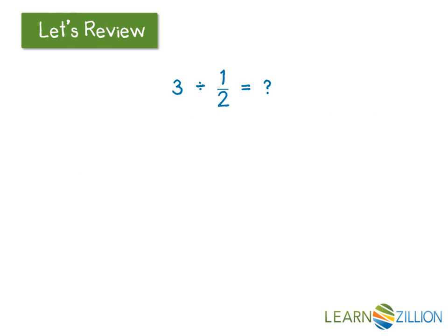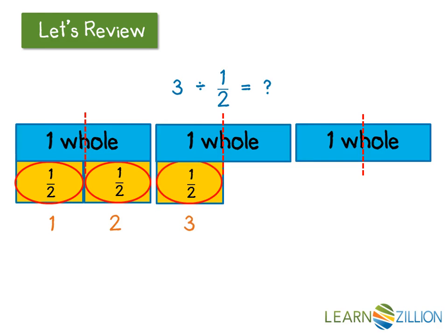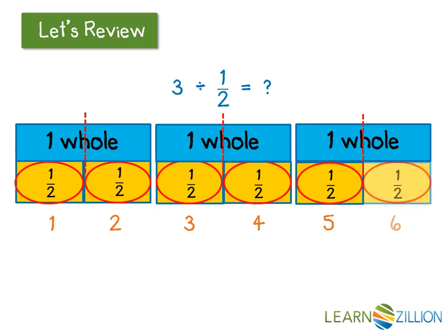Let's review. You already know that you can divide whole numbers by fractions. In this example, you see the whole number 3 being divided by a fraction, 1 half. To find the quotient, I need to determine how many 1 halves are in 3. You can see that there are 6 pieces with a length of 1 half in 3.